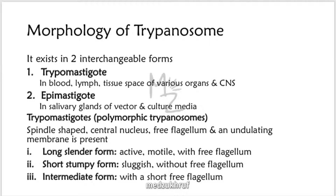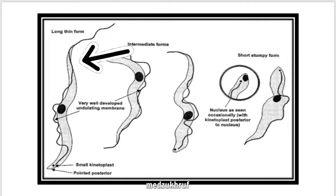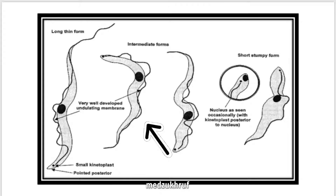Trypomastigotes are spindle-shaped, have a central nucleus, a flagellum, and an undulating membrane. The first form is the long slender form, which is active and motile, with a free flagellum. The second form is the short stumpy form, which is sluggish and without a free flagellum. The third form is the intermediate form with a short free flagellum. In the diagram you can see the long thin form with a central nucleus, undulating membrane, and flagellum; the intermediate form with a small flagellum; and the short stumpy form with no flagellum.